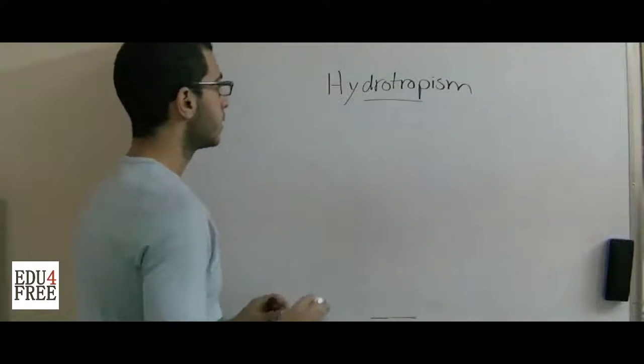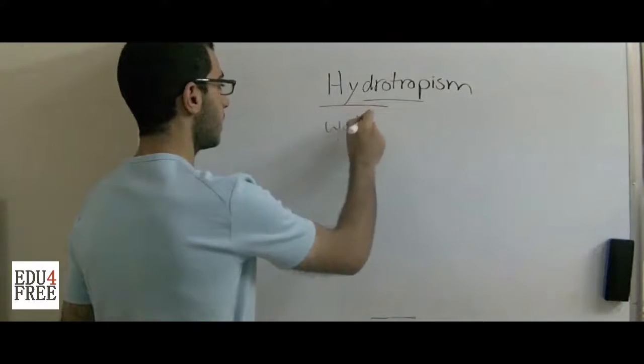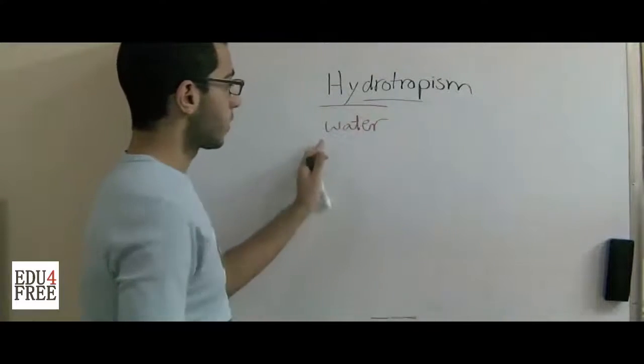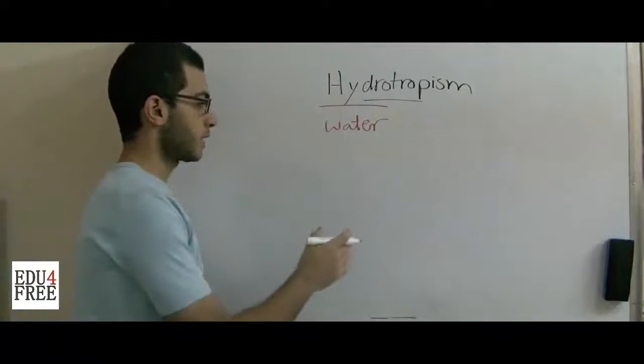Hydrotropism is related to water, so this occurs due to the different distribution of water around the different sides of the plant.